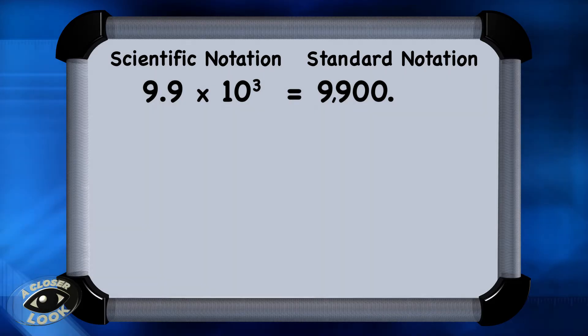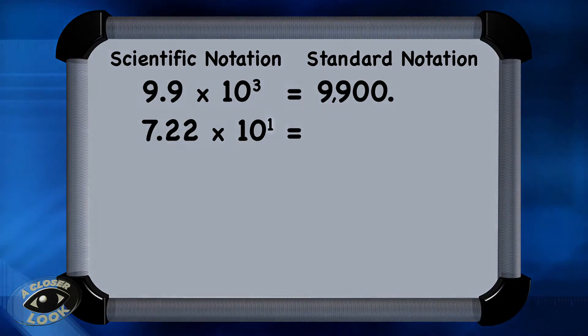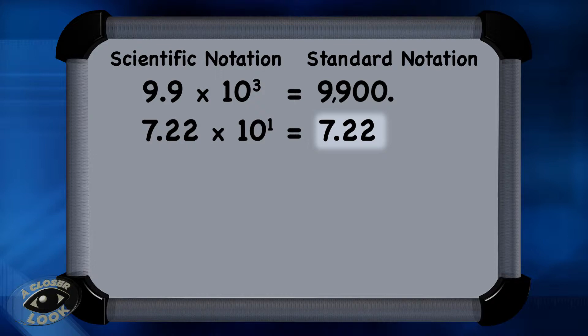The second example is 7.22 times 10 to the first power. If there is a positive exponent, remember, move the decimal to the right. And in this case, only move it one place to the right. So it would be 72.2.